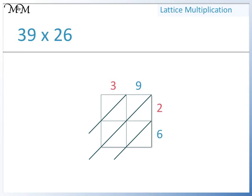Question 4: 39 times 26. 3 times 2 equals 6. 9 times 2 equals 18. 3 times 6 equals 18. 9 times 6 equals 54. Here we have 4. 8 plus 8 plus 5 equals 21. We write 1 here and carry the 2. 6 plus 1 plus 1 plus the 2 that we carried equals 10. We write 0 here and carry the 1. 0 plus 1 equals 1. We have 1, 0, 1, and 4. So 39 times 26 equals 1014.